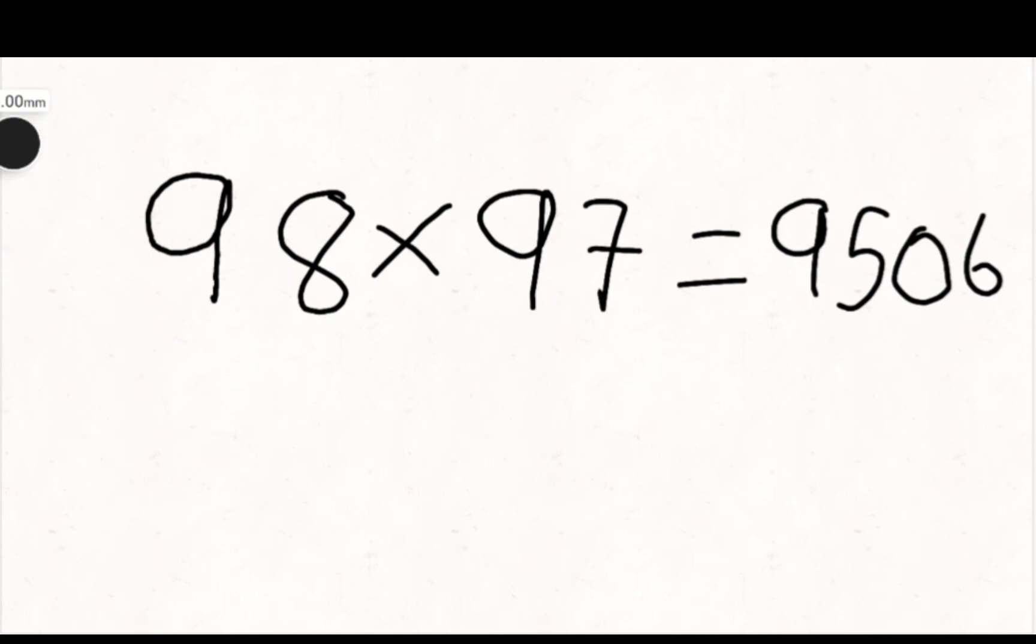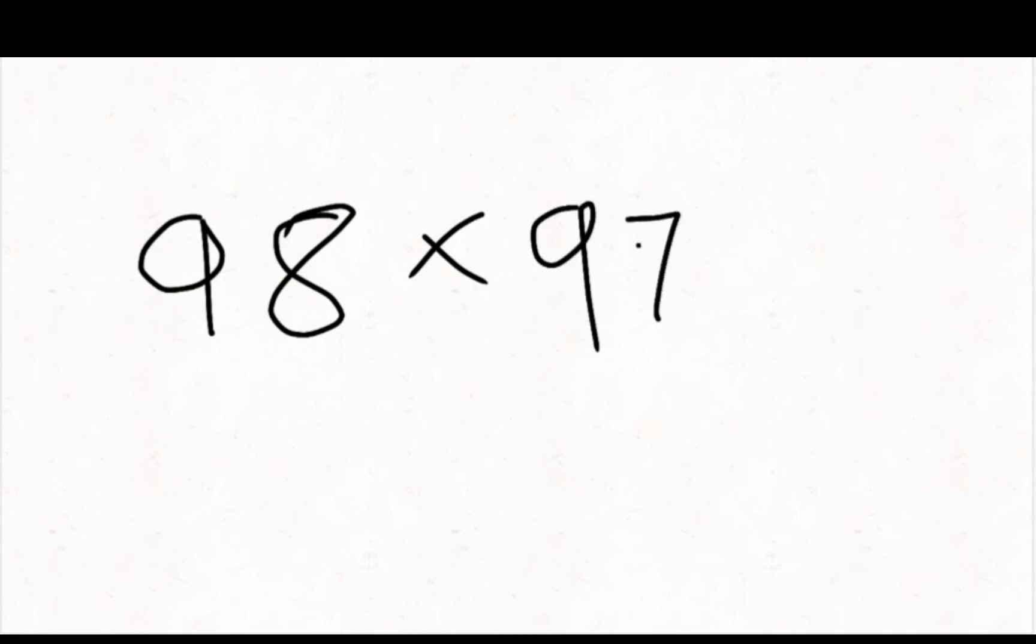So the first step is 98 times 97. How far are they from 100? This is minus 3, it means plus 3 equals 100. So we gotta do minus 3 plus 2 equals to that. All you need to do is add them.